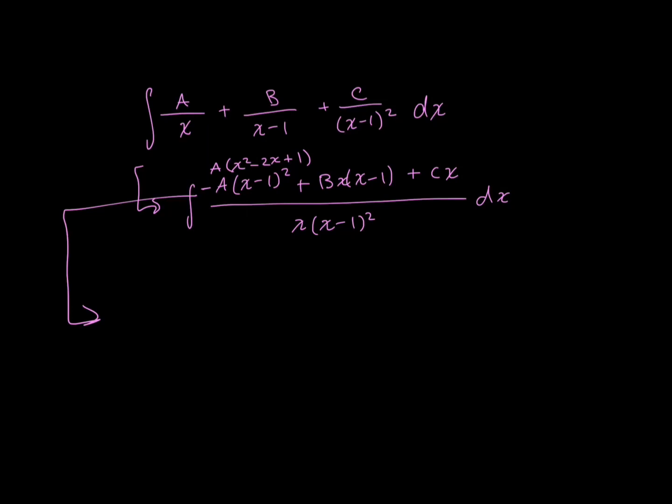So, but when I distribute everything in, I get that my entire numerator is equal to Ax squared minus 2Ax plus A plus Bx squared minus Bx plus Cx is all equal to my original numerator, which was 3x squared minus 5x plus 1.